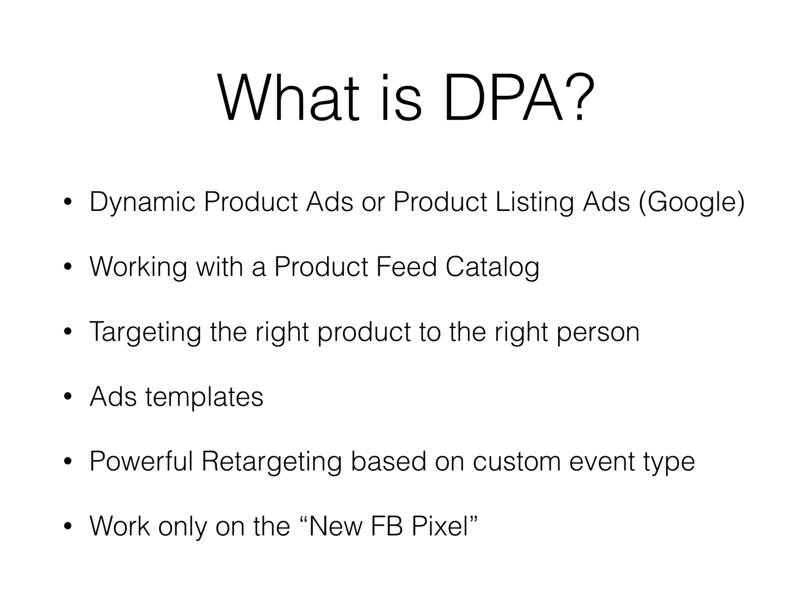For DPA you're going to need to work with a product feed catalog. The other thing it does is target the right product to the right person. It's a bit like retargeting but with more layers of data, which is much more performant — that's why you can get crazy ROI, even better than traditional retargeting. You can also create ad templates dynamically using tags, and it offers super powerful retargeting based on custom event types from the new pixel.